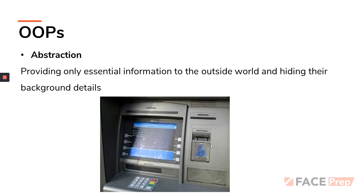One more example is an ATM machine. We just put in our numbers, tell the machine how much money we want, and take it out of the outlet port. But do we try to understand what exactly is happening — what gears are flipping inside, what data is being sent to the bank, or how it gives us the money? We do not worry about it. The only thing that matters is what's displayed on the screen and how much money we get. This is again an example of data abstraction.